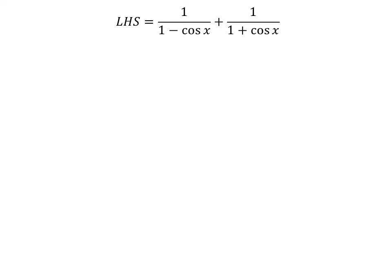Let us start from the left-hand side of the equation. Left-hand side of the equation is equal to 1 upon 1 minus cosine of x plus 1 upon 1 plus cosine of x.